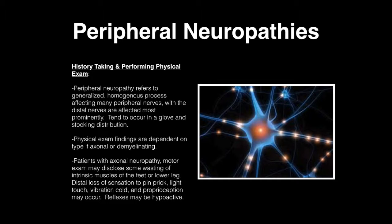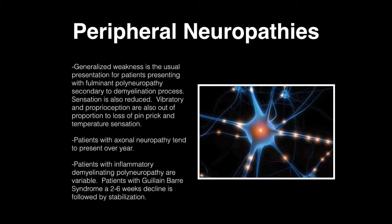Patients with axonal neuropathy on motor exam may show wasting of intrinsic muscles of the feet and legs. Distal loss of sensation to pinprick, light touch, cold, vibration, and proprioception may occur, and reflexes may become hypoactive. Generalized weakness is the usual presentation for patients with demyelinating polyneuropathy, and sensation is also reduced. Vibratory and proprioception loss are out of proportion to loss of pinprick and temperature. Patients with axonal neuropathy tend to present over a year, while those with inflammatory demyelinating polyneuropathy are variable. Guillain-Barré syndrome shows a two to six week decline followed by stabilization.